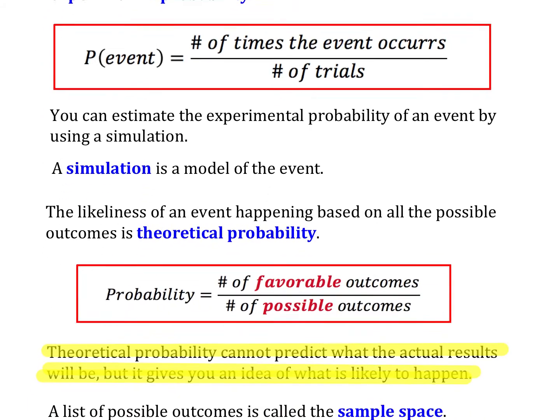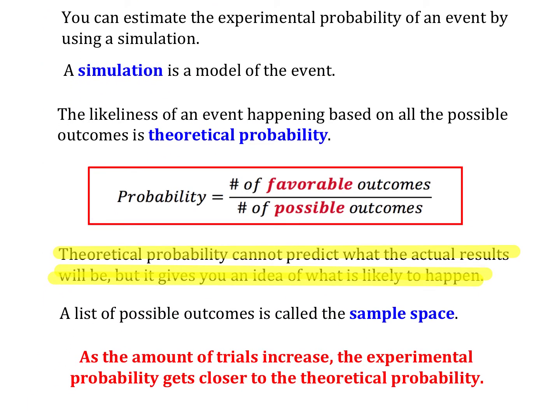Now, theoretical probability is probably what we're most used to. Theoretical probability is what should happen in theory. So if I'm flipping a coin, in theory, 15 times should be heads, 15 times should be tails. However, if I were to run an experiment and flip a coin 30 times, that's not guaranteed to happen.